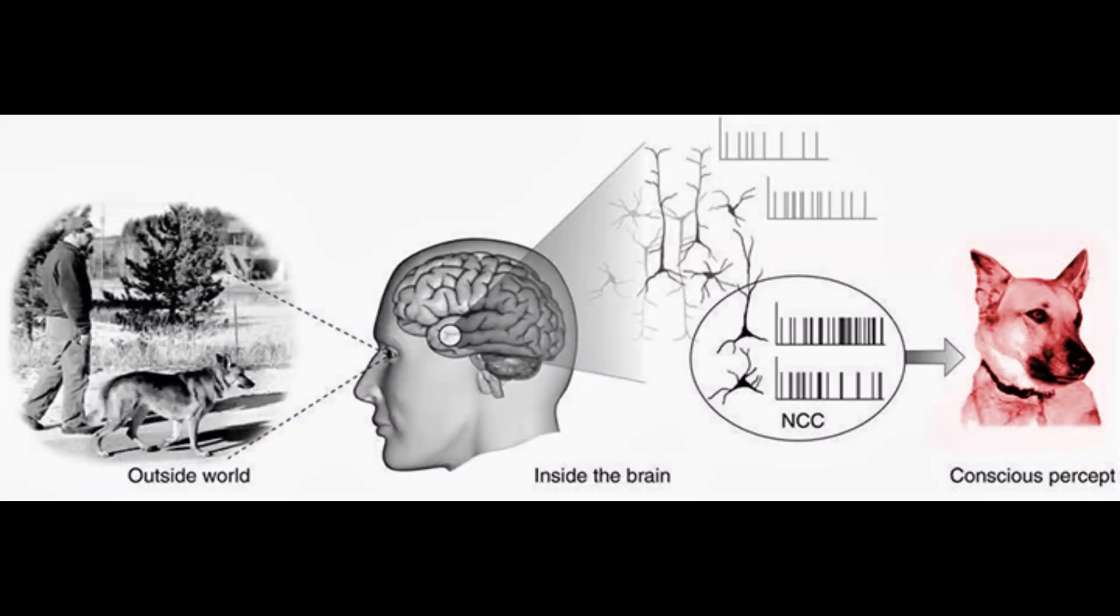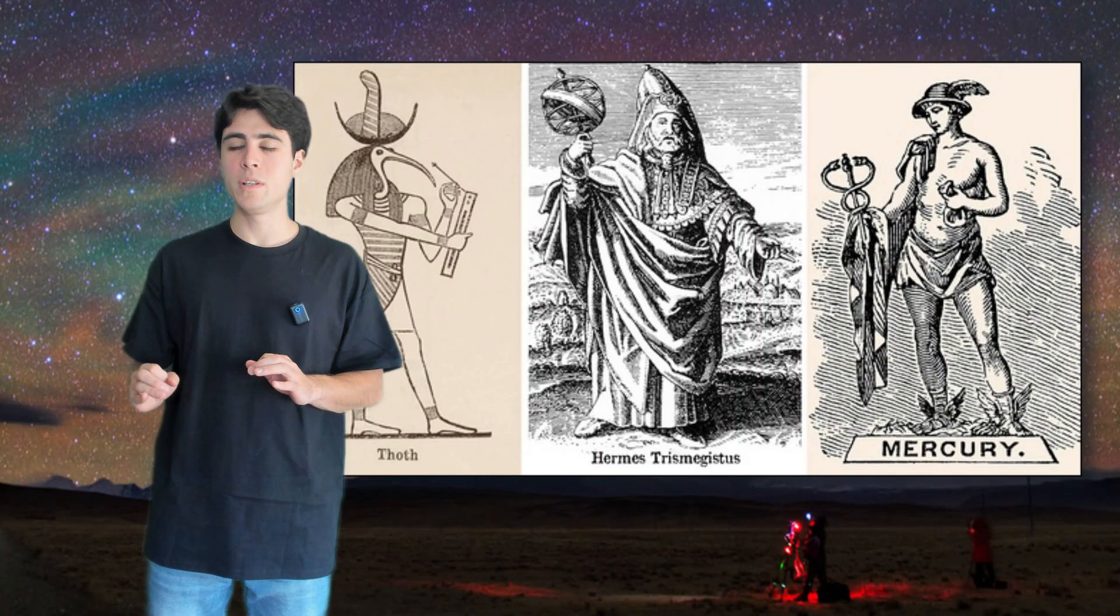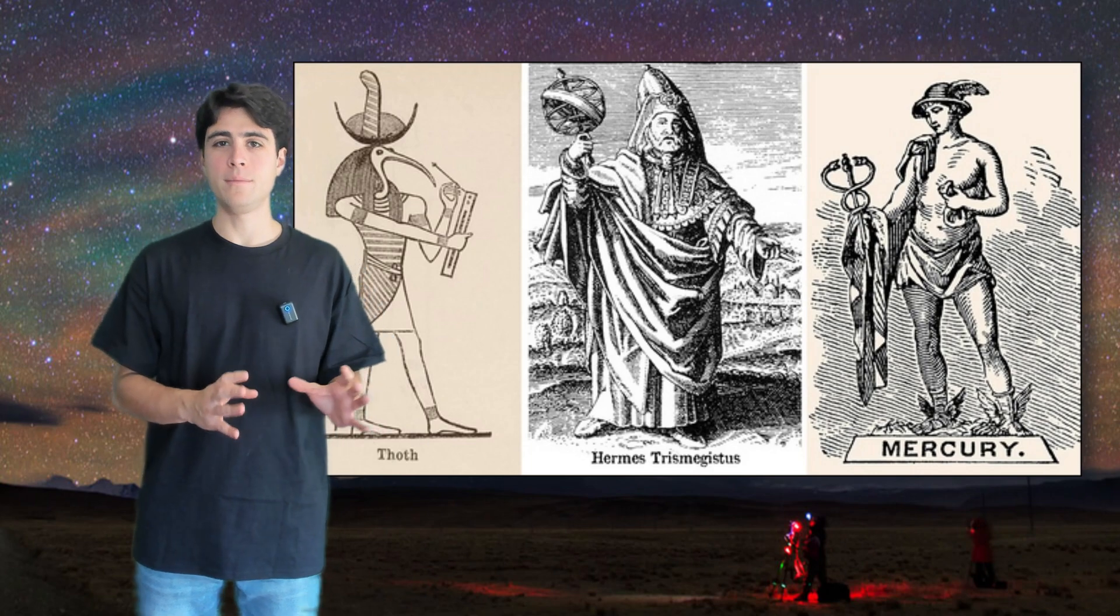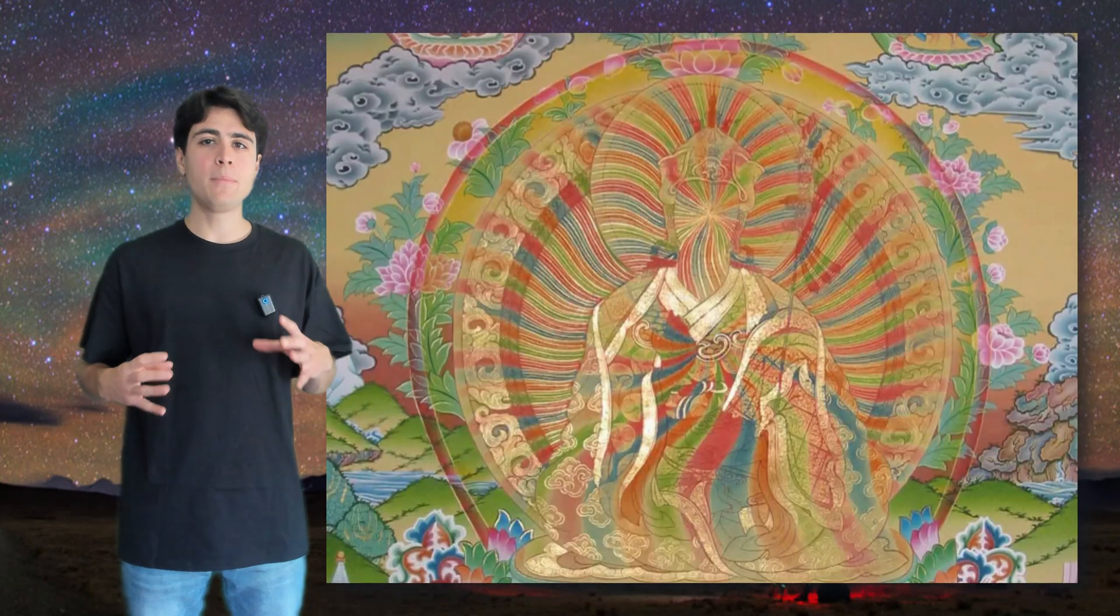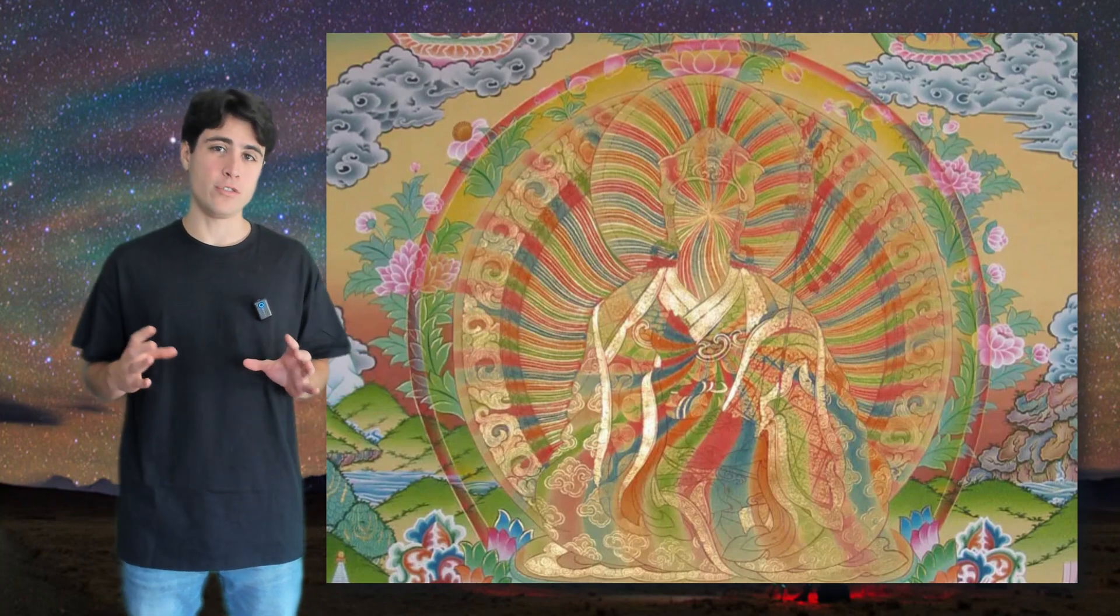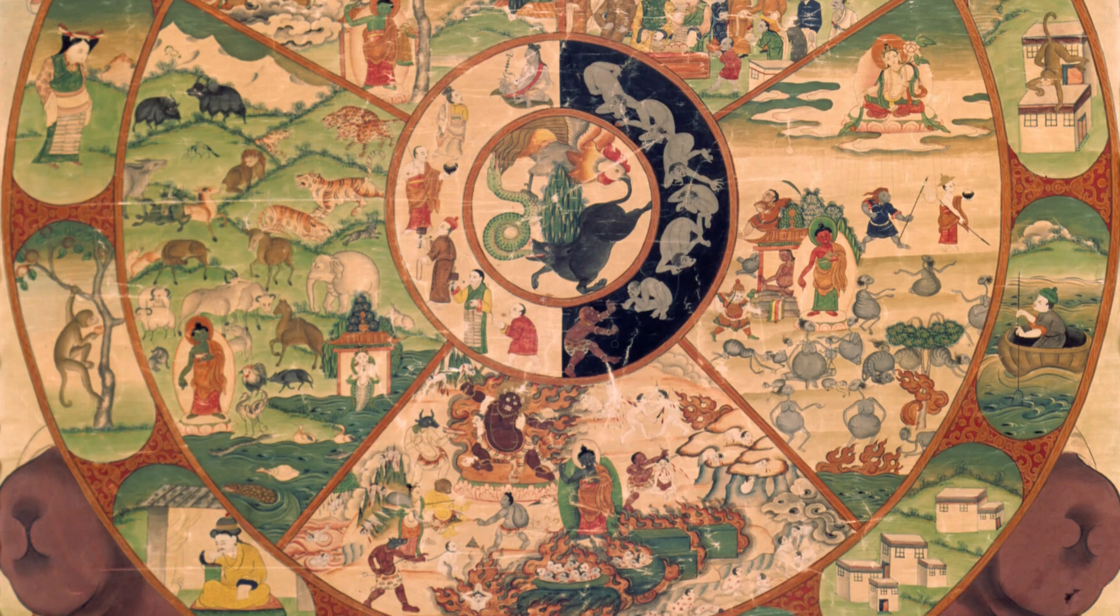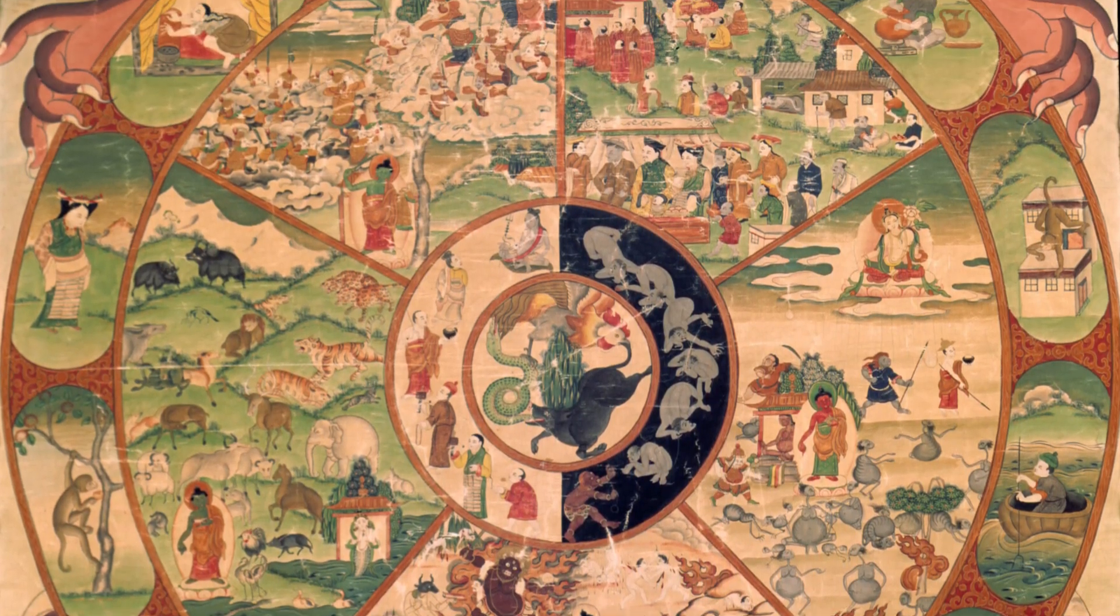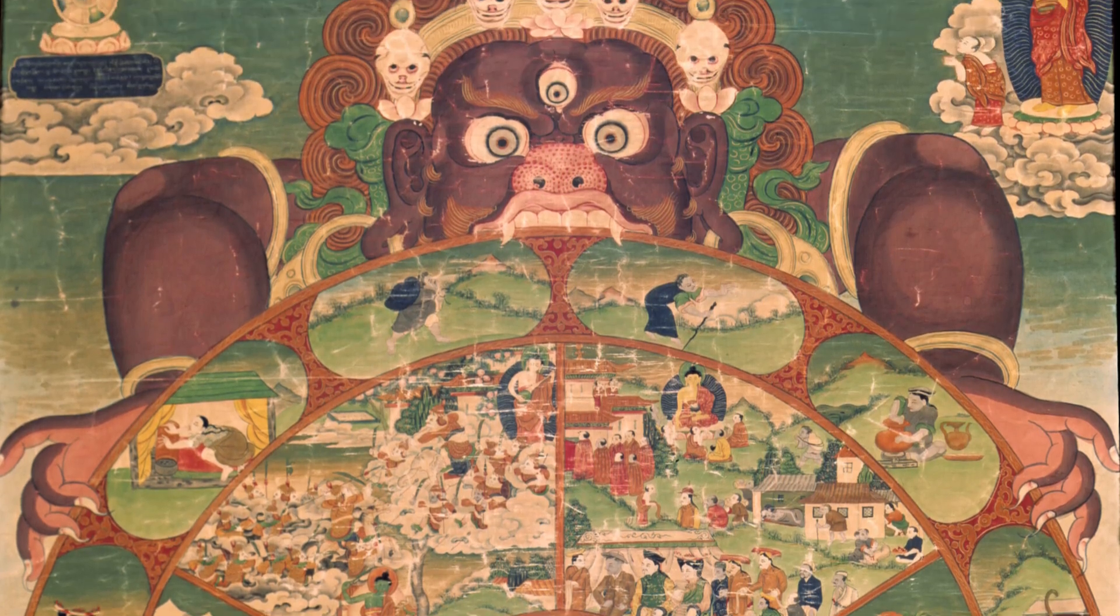There is no separation between the inside and outside world. Everything arises out of consciousness. People all across the ancient world were aware of this non-dualistic nature of reality. Today, we will focus on ancient Tibet and its people's understanding of life as a never-ending dream. From this perspective, they were able to map out the landscape of the various dream states we may find ourselves in and even provide us a guide for waking up.